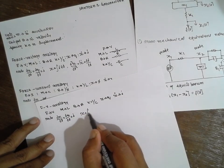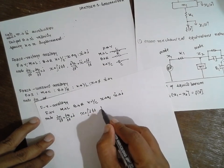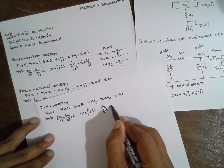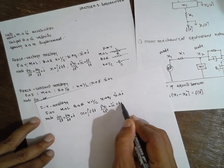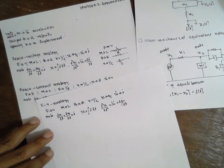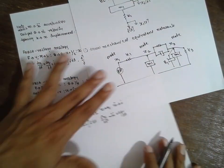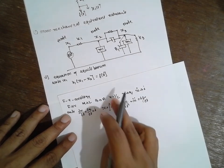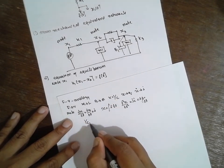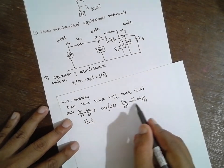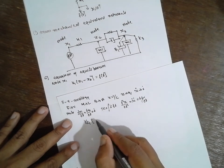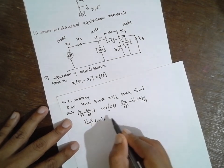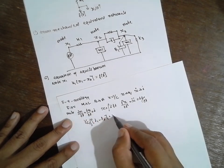Note this is very important: dx/dt equals dq/dt which is nothing but i. Where x is nothing but the integration of i dt. d²x/dt² is nothing but di/dt. For node 1, K becomes 1/C1, x becomes the integration of (I1 minus I2), and F becomes V(t).